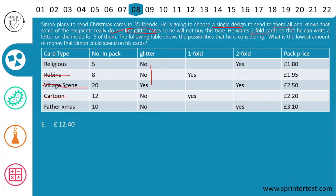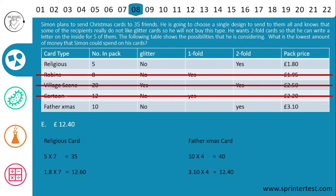We are left with religious cards and Father Xmas cards. For religious cards, each pack contains 5 cards and costs £1.80. He needs 35 cards, so he buys 7 packs: 1.80 × 7 = £12.60. For Father Xmas cards, each pack contains 10 cards and costs £3.10. He needs 35 cards, so he buys 4 packs — getting 40 cards with 5 spare for next year: 3.10 × 4 = £12.40. This is the lowest amount, so the answer is E, £12.40.